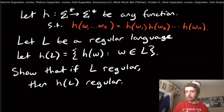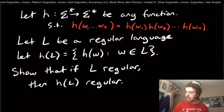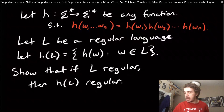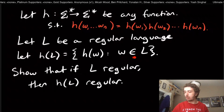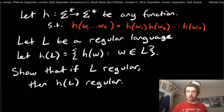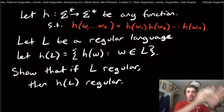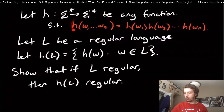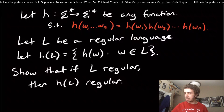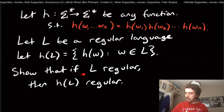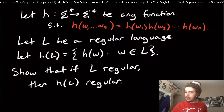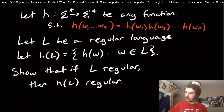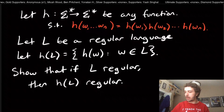We're going to let L be a regular language, and we're going to let H(L) be all the strings H(w) where w was an original string in the language. So take every string in the original language, apply H to it, and get the resulting language. We want to know: if L is regular, then is H(L) regular? We can't let H be just any function — we need to restrict it.